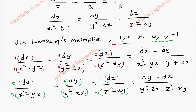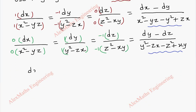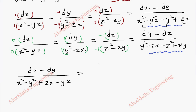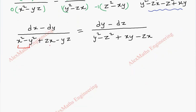We have applied both sets of multipliers and now we equate these two terms — only then is it possible to integrate in the next step. Taking (dx minus dy) over (x² minus y² plus zx minus yz) and grouping, we can factorize using the a² minus b² form. We can also take z common in the denominator.